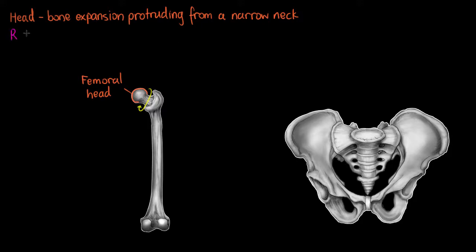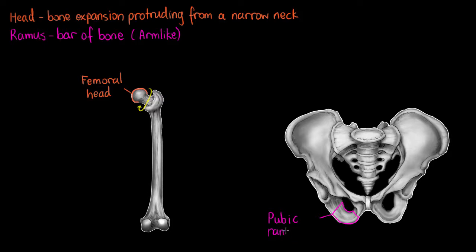The last bone marking involved in joint formation is called a ramus. A ramus is a bar of bone that appears arm-like or bridge-like. Looking at the pelvis or coxal bone on the right-hand side of the screen, we can see a good example of a ramus. There are actually two here, so like with the vertebrae, we differentiate them by position. We have the pubic ramus inferior, and just above it we can see another arm of bone called the superior pubic ramus.